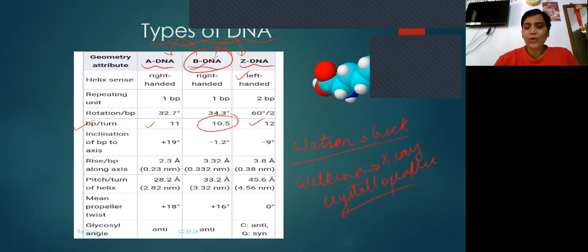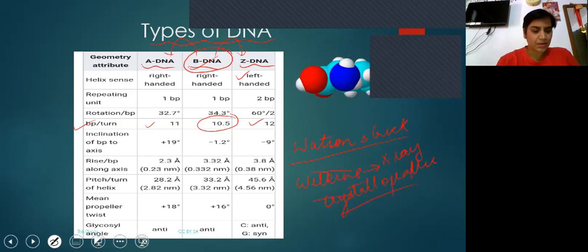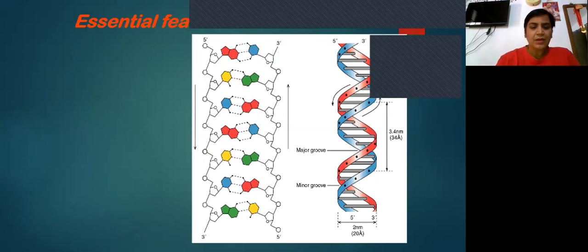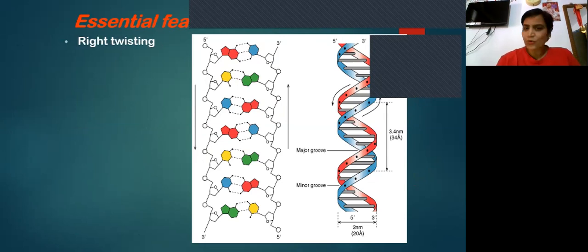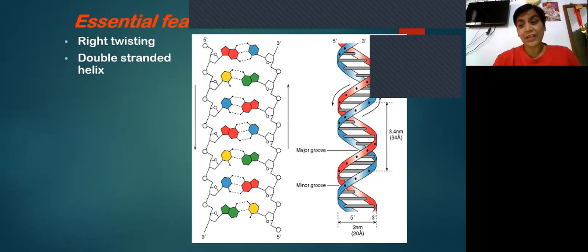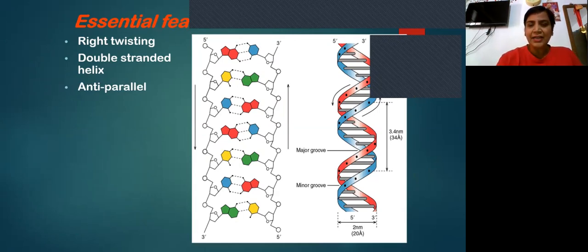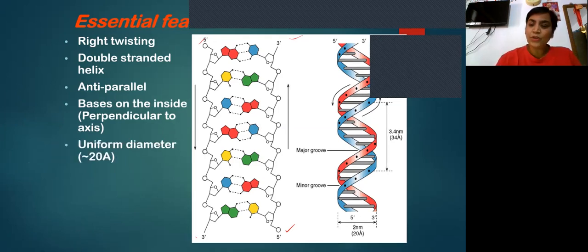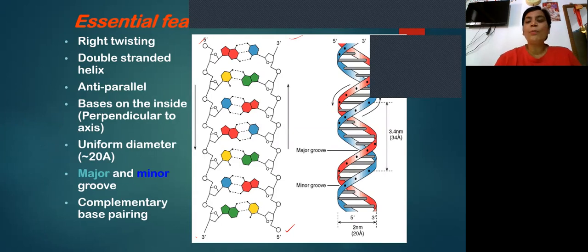The basic postulates of the Watson and Crick model are: first, it is right-twisting, meaning right-handed. Second, it is double-stranded — it has two strands. These two strands are anti-parallel to one another, meaning if one runs in the direction 5' to 3', the other runs 3' to 5'. The bases are on the inner side, perpendicular to the axis. The uniform diameter is 20 angstroms. Major and minor grooves are present.